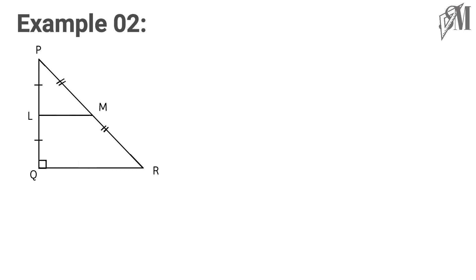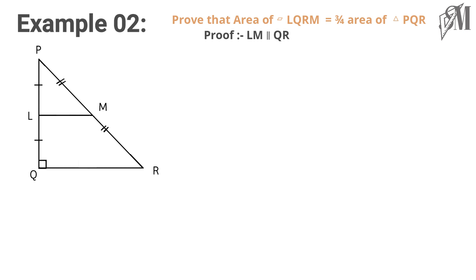We must prove the area of the quadrilateral LQRM is three-fourths the area of triangle PQR. By the midpoint theorem we can state LM is parallel to QR and LM is half of QR. So let's take LM is equal to x, then QR will become 2x, since LM is half of QR.